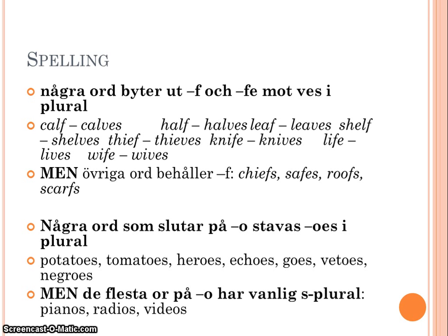There are some words that end with o where you add es in the plural, such as potatoes, tomatoes, heroes, echoes, vetoes, and negros. But most words that end with o have the common s plural, as in pianos, radios, and videos.